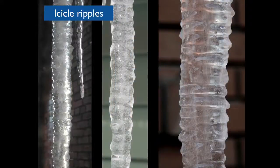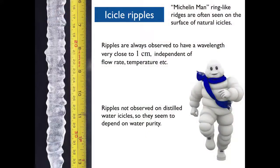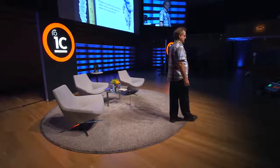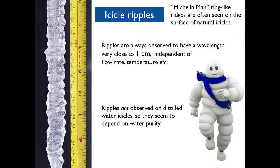If you go out in nature and look at icicles on the side of your house, you'll notice they quite often have this undulatory, ripply shape. After the discovery that they depend on impurities in the water, the next discovery is that ripples are always observed to have a wavelength extremely close to one centimeter in length. So if you're ever in the woods and you've lost your meter stick, you can just break off the nearest icicle — it makes a pretty good ruler.